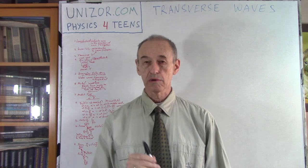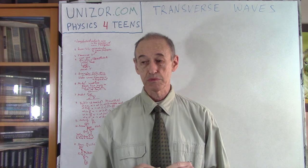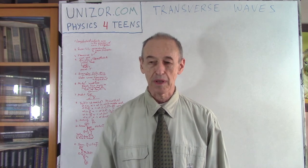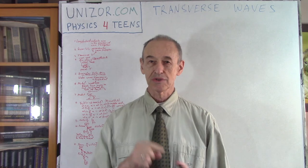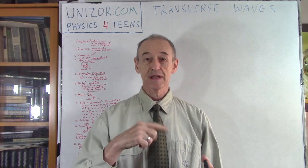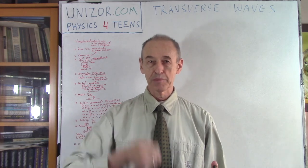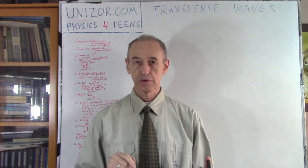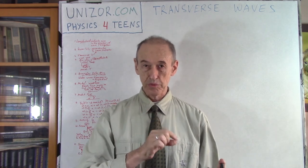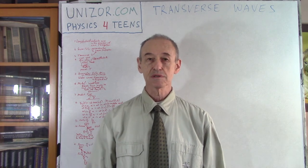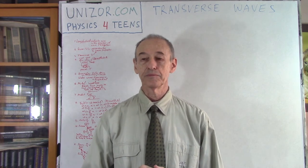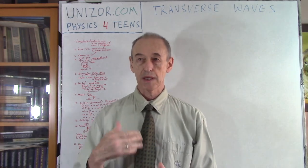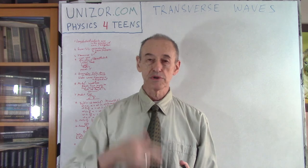Today we will learn about a different kind of waves — maybe the waves which you're kind of more accustomed to. These are waves when the molecules of the carrier of the waves are moving not in the direction but perpendicular direction. It's like a rope when you are shaking one end of the rope up and down — the waves are going along the rope and the movements of the molecules of the rope are across that direction. This is called transverse waves.